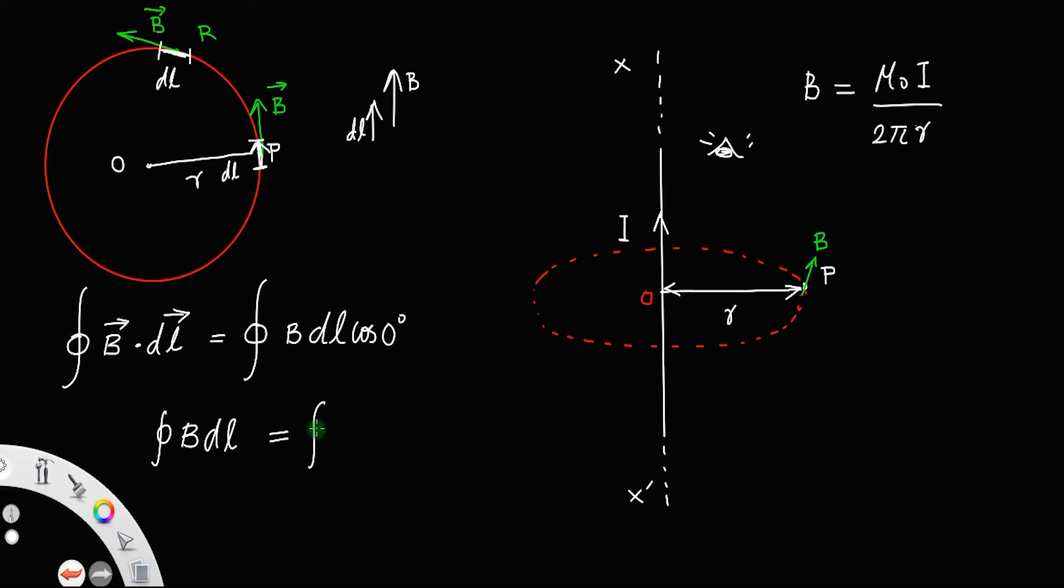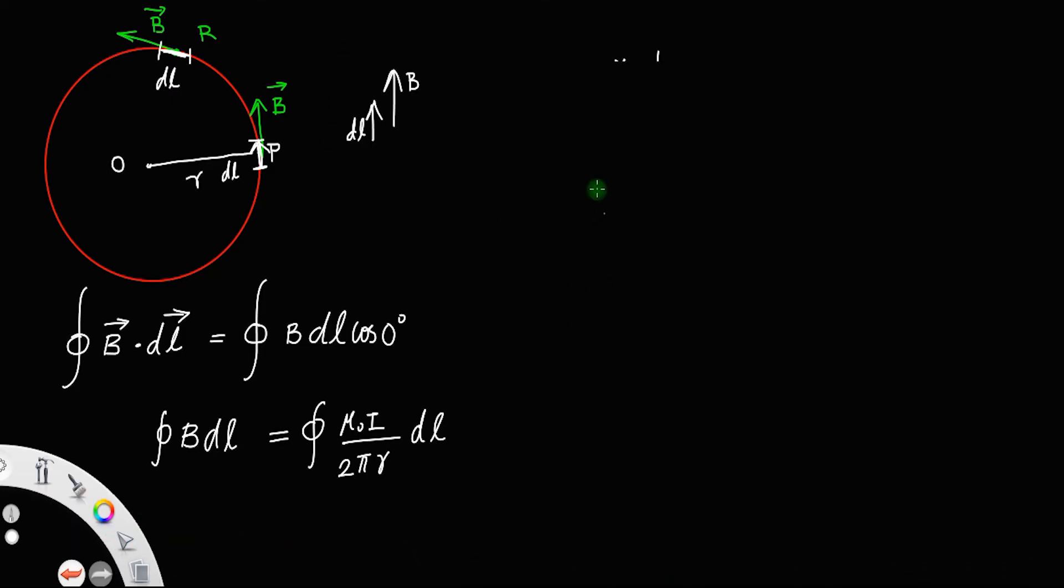So, this is equal to integral, you can write mu 0 I divided by 2 pi R instead of B and then you can put DL. See mu 0 I and 2 pi R all remain constant. So, you can take that out mu 0 I divided by 2 pi R closed integral DL.